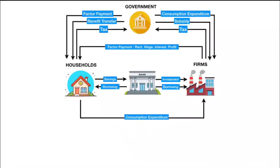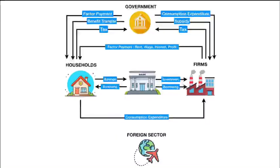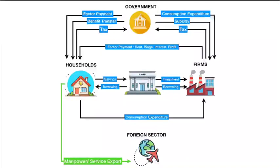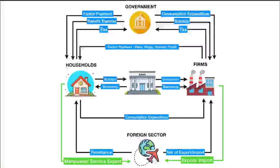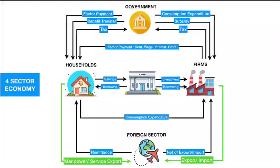Assuming we understood everything so far, let's complicate things a little more. No economy is isolated from other economies in the world — well, let's not count North Korea. There comes the role of the foreign sector, meaning a different economy from somewhere around the world. People move abroad, earn money, and send it back home. So basically, the household is exporting labor and in return receives money, or what we call remittance. Similarly, business firms export products abroad and import from abroad, and for that there is a money transaction between the foreign sector and the firms. And this is an example of a four-sector economy, as there are four sectors. So, this was the circular flow of income or circular flow of money.